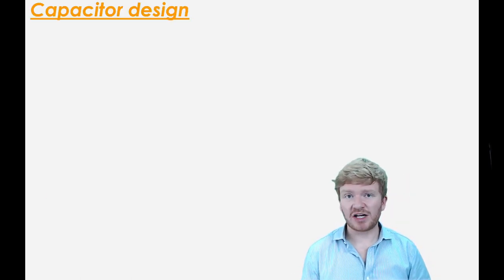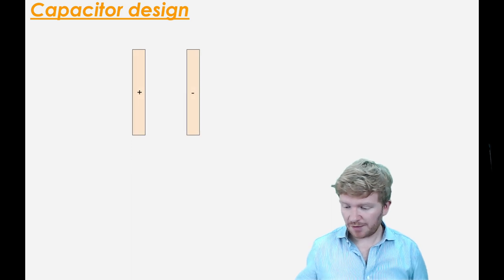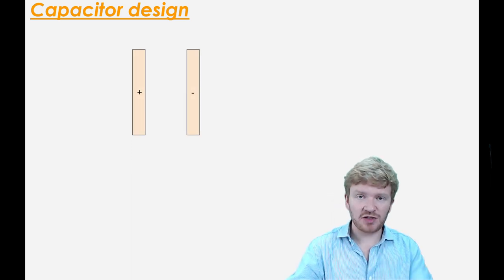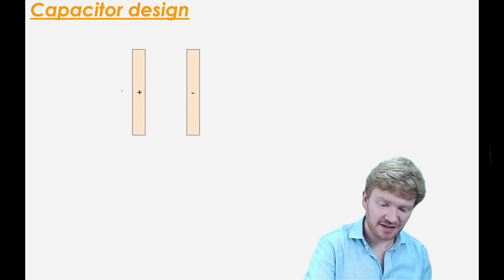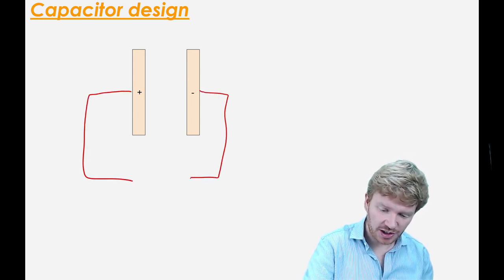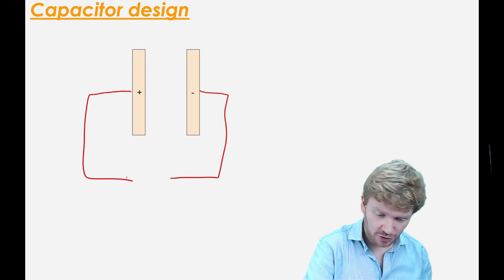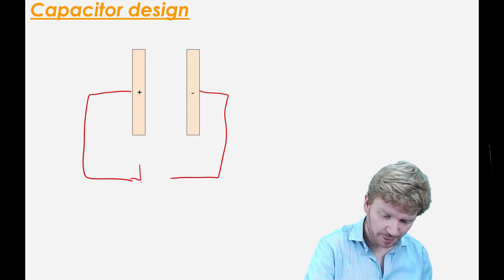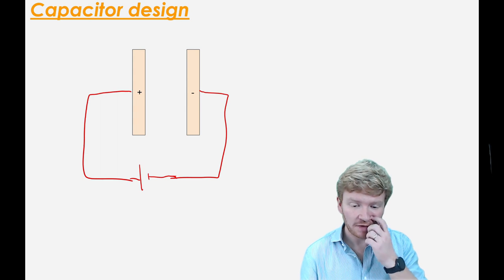So what does a capacitor actually look like? Very simply put, it is two plates of metal, and those plates can be attached to a voltage or to a power supply — just like this, connected to a battery.